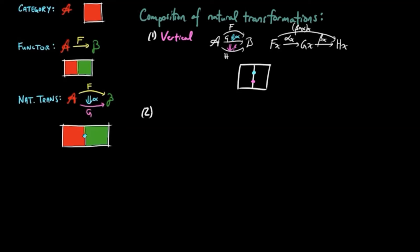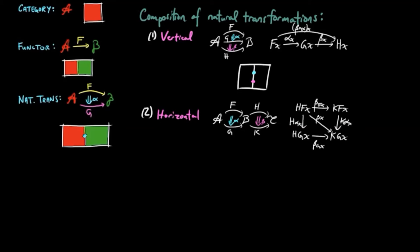The second type of composition is horizontal, where alpha followed by beta here is defined on component x as either beta fx followed by k alpha x or h alpha x followed by beta gx, since they are equal by naturality of beta.